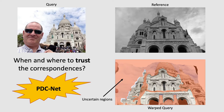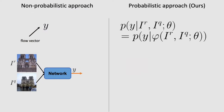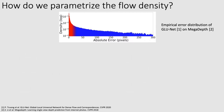Now let's dive into the method. While most methods train a network to predict a flow vector y at each location, our goal is to predict the conditional probability density of each flow vector y given the input images. In practice, the network predicts at each pixel location the parameters phi of this flow density, which encode both flow and uncertainty information. So how do we parameterize this flow density? From the empirical error distribution, we see that errors can be categorized into two populations: inliers and outliers.